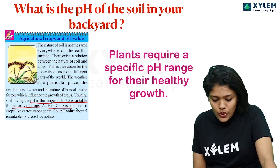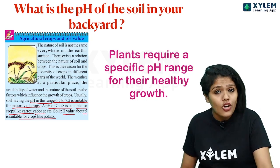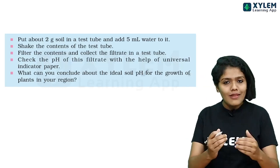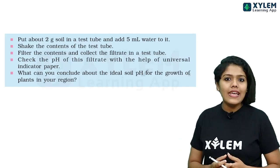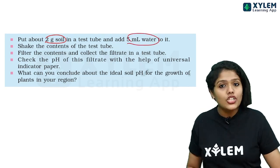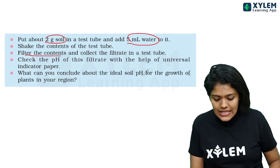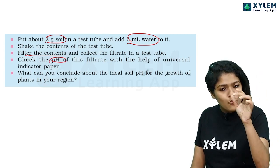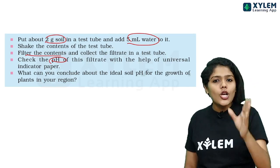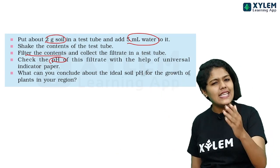The average crop grows well in a pH range of 6.5 to 7.2. A pH of 7 to 8 is suitable for crops like carrot and cabbage, while a pH of around 5 is suitable for crops like potato. Different crops need different pH values. You can easily test the pH of your own backyard soil: take 2 grams of soil in a test tube, add 5 ml of water, stir, filter the contents, and test the filtrate using a pH paper or pH scale to identify whether the soil is acidic or basic.